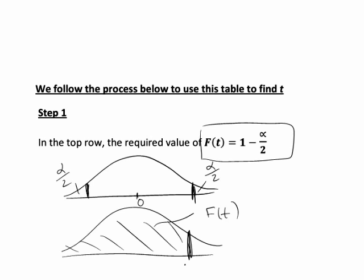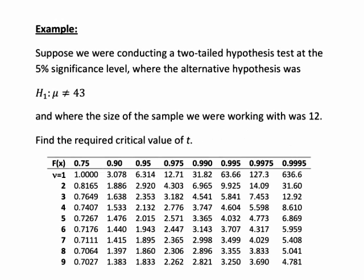Let's have a look at this in practice with an actual example. Suppose we were conducting a two-tailed hypothesis test at the 5% significance level, where the alternative hypothesis was of the form mu not equal to 43. That not equal to sign is confirming it's a two-tailed test. And the sample size that we are working with is 12. We want to use this information to find the critical values of T.